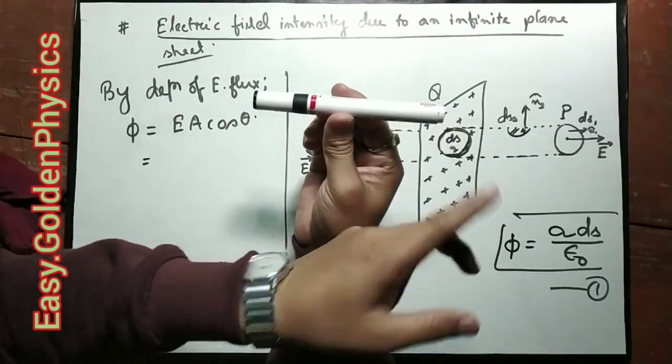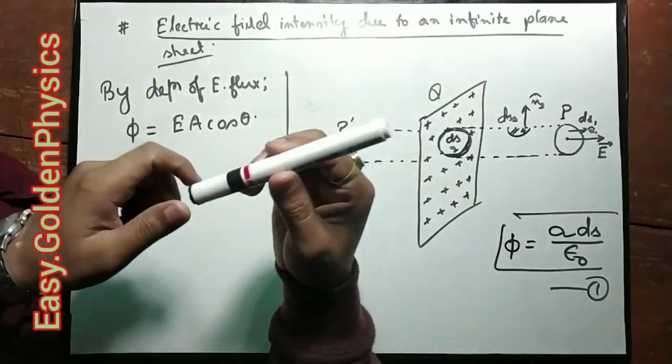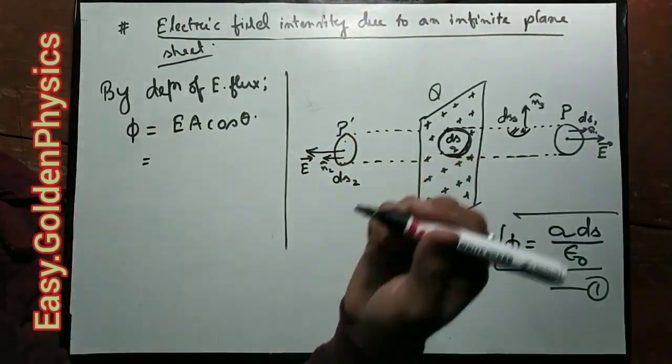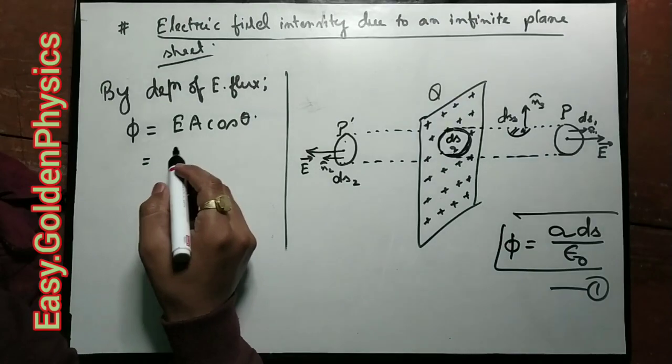The base surface area of the pillbox is the total surface area of the end caps.